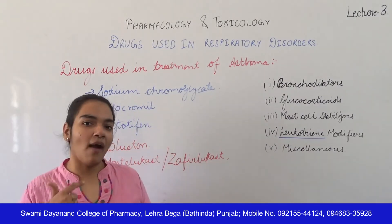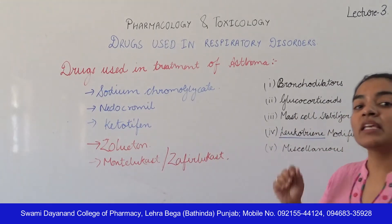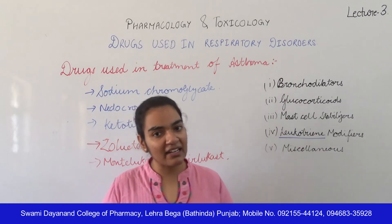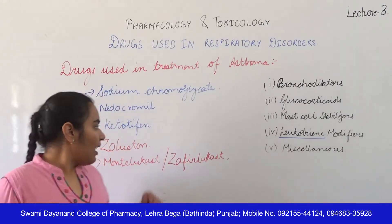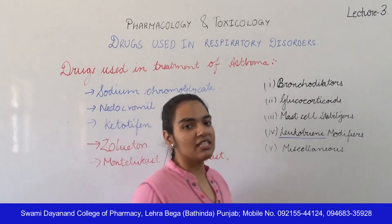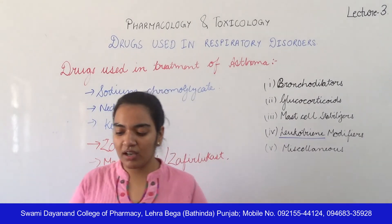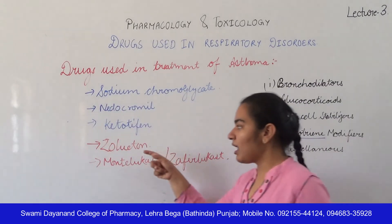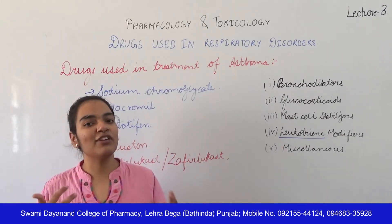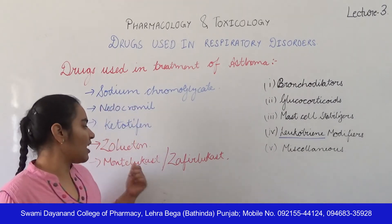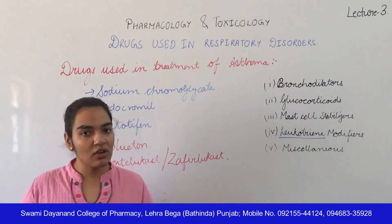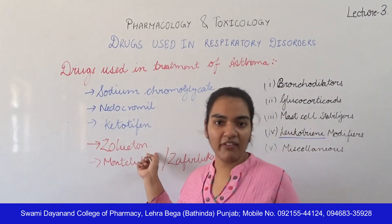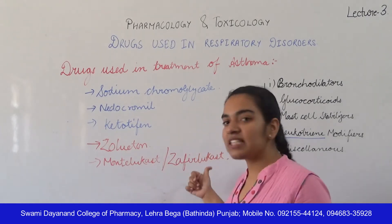Zileuton works by inhibiting the enzyme responsible for leukotriene formation. The required dose of zileuton is 800 mg, taken three to four times a day — a higher dose compared to other drugs. Zileuton plays a specific role in allergy-induced, exercise-induced, or cold-air-induced obstruction, as well as chronic asthma.